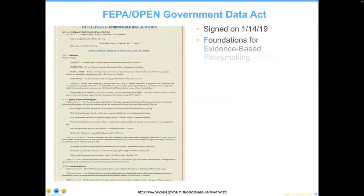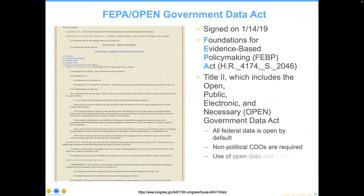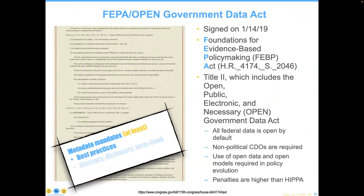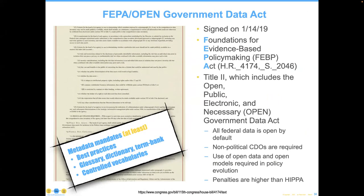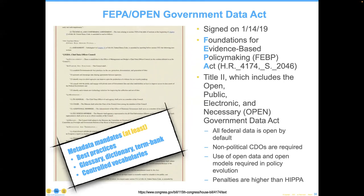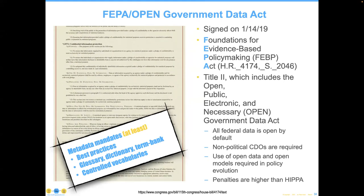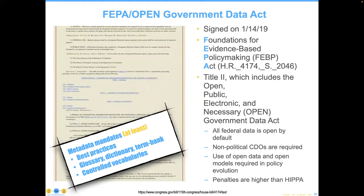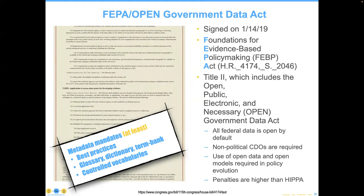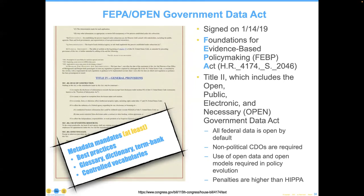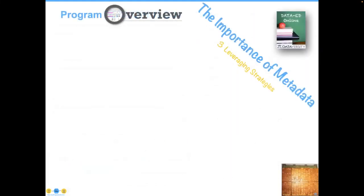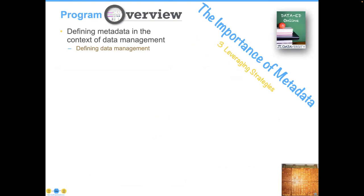The federal government was incorporating metadata into legislation — this is an act signed on the 14th of January 2019. It mandates the use of best practices, dictionary, term bank, and controlled vocabularies. All federal data is now open by default. Non-political CDOs are required, which means they can't be taken out — they are government employees, not political employees. The use of open data and open models are required in policy evaluation. And the last bullet point is what gets everybody: the penalties for violating the FIPA act are higher than HIPAA. That's enough to make people pay attention right away. So we've talked very rapidly here about what metadata is in the context of data management. We had to define data management in order to do that. And when we talk about using metadata, we are trying to leverage the data.